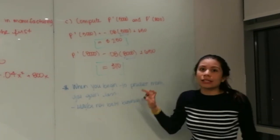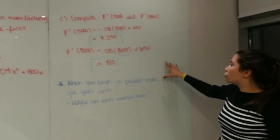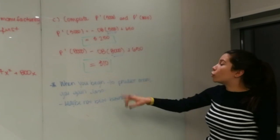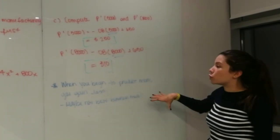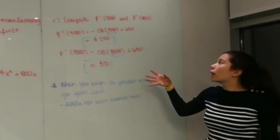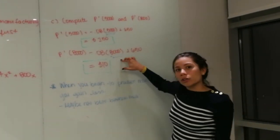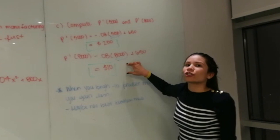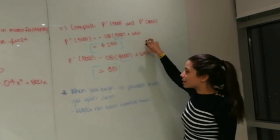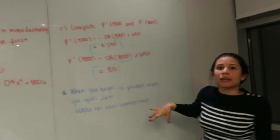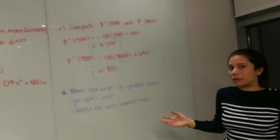This is to say that when you begin to produce more — in this case, when we plug in 8,000 units — you actually gain less. So maybe it's not the best business decision.